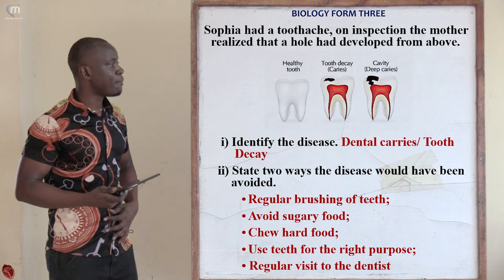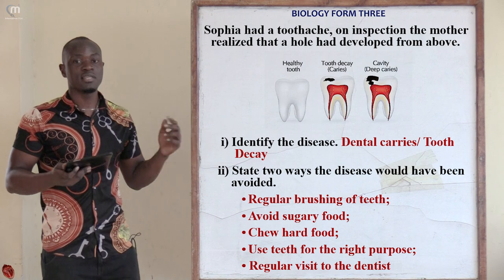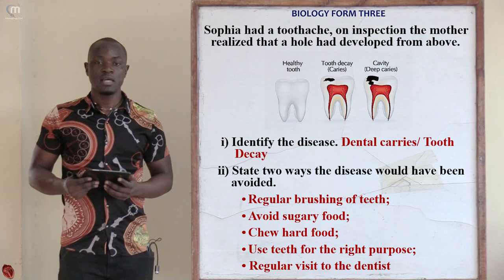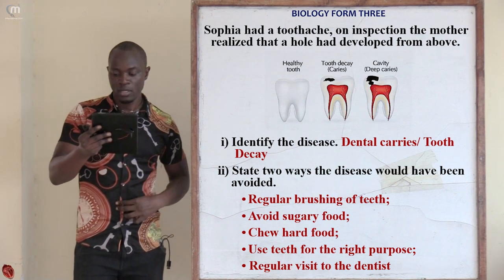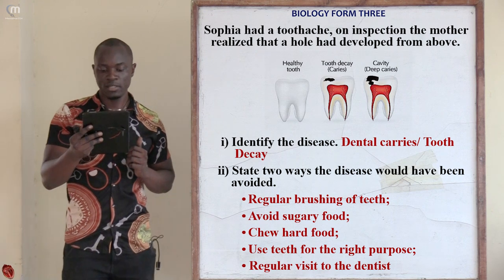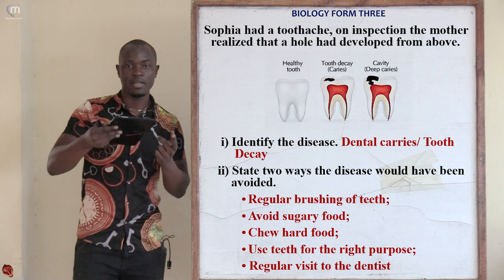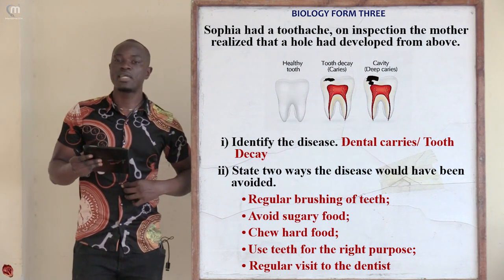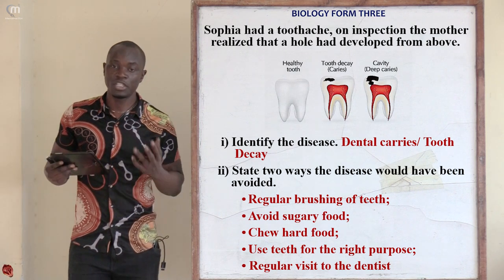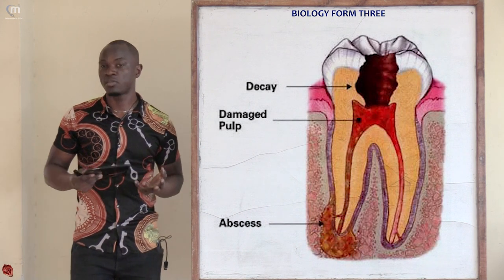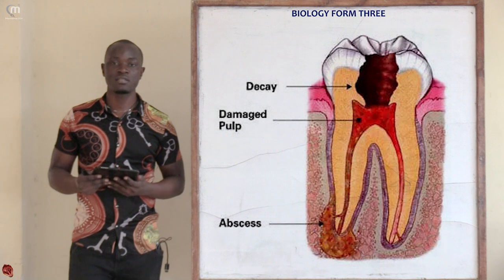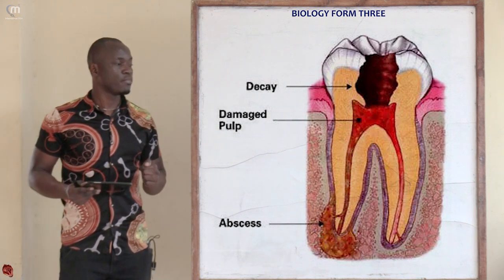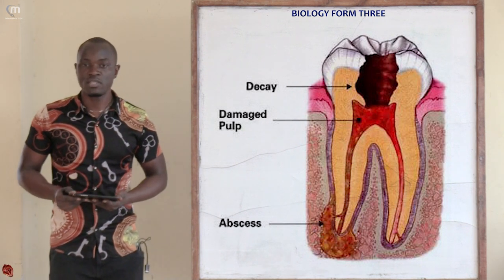Question number eleven: Sophia had a toothache; a hole had developed from above the teeth. The question asks to identify this disease. The disease that leads to decay of the enamel is dental caries, or tooth cavity. The cavities break through the enamel heading toward the inside of the teeth. If cavities reach the nerve endings, that is when pain is felt.